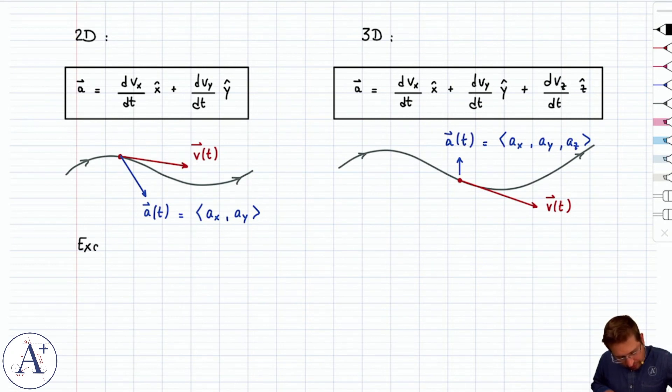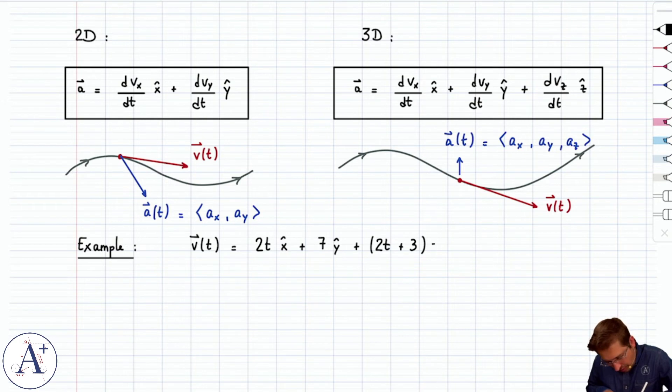And let's start up where we left off with the position vector that we had been given before and the velocity vector that we derived from it. So, we found that the velocity vector before was given by 2t x hat plus 7y hat plus (2t plus 3) z hat. That's just the previous video on instantaneous velocity. We were given a position vector r of t, and we took dr/dt. We got v of t, and that's what came out.